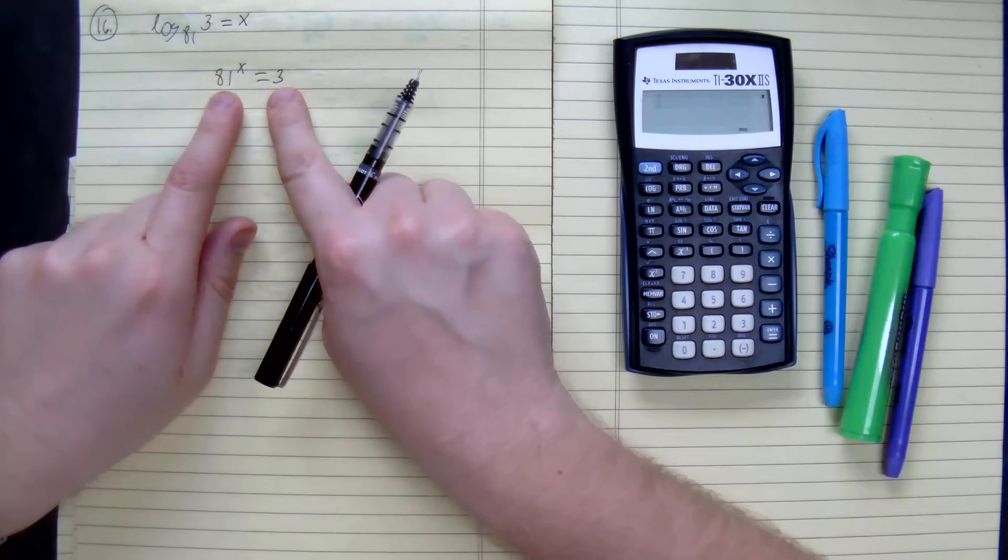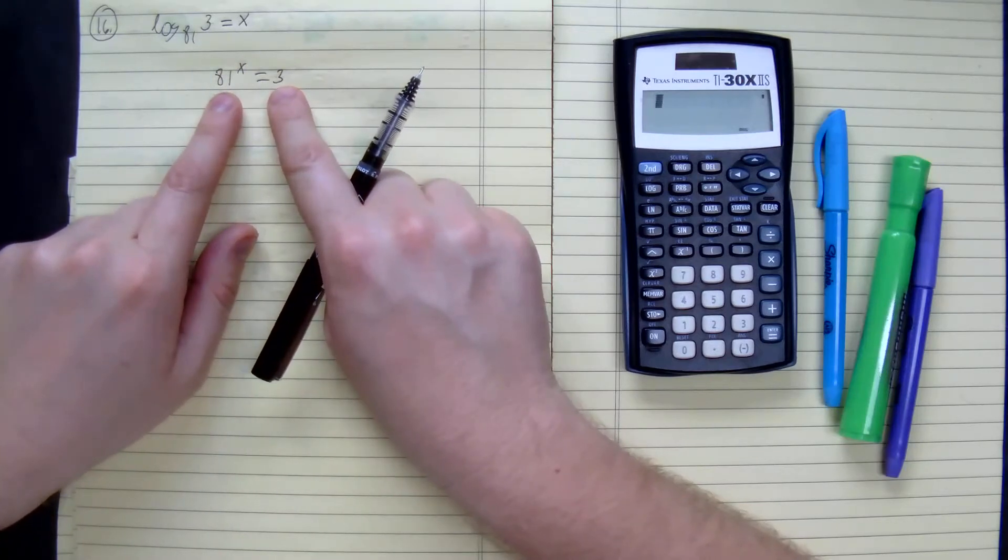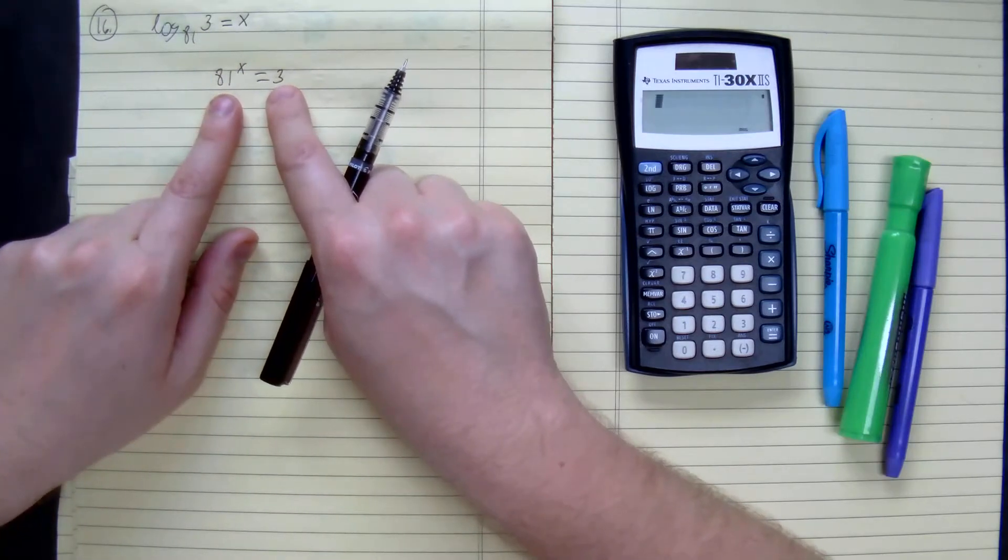Since I know 3 can eventually become 81, we get 3 times 3 is 9.